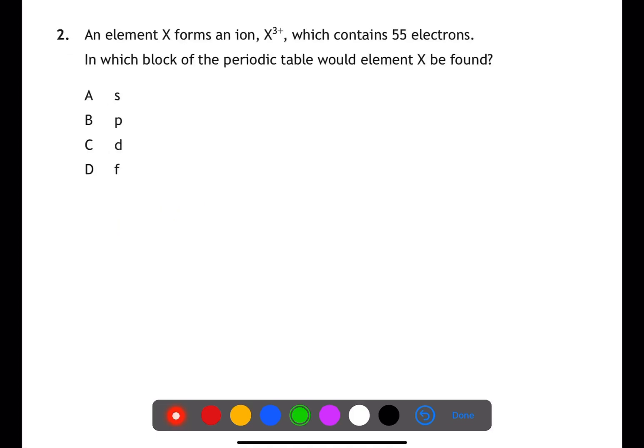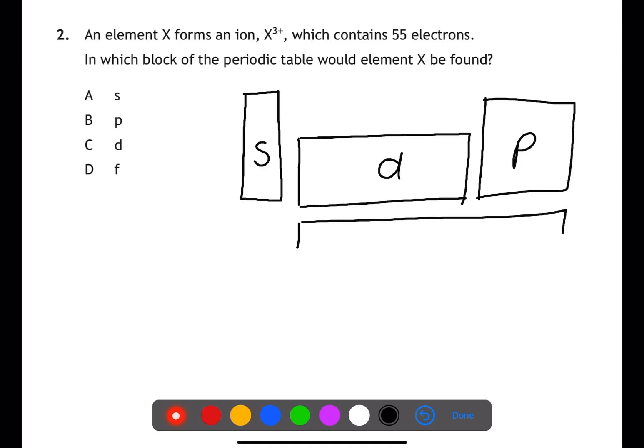For question two, we need to understand the structure of the periodic table. The periodic table is split into four blocks. These blocks are defined by the last orbital into which an electron was placed. We have the S block, the D, the P and the F.